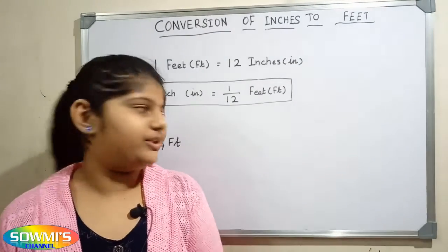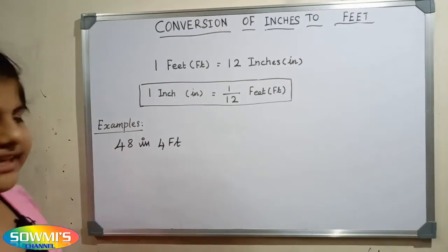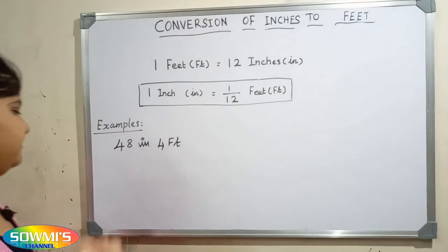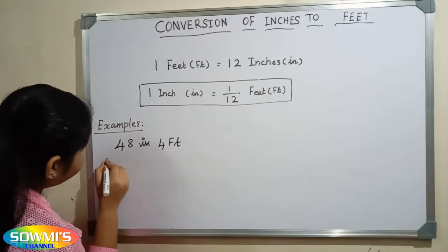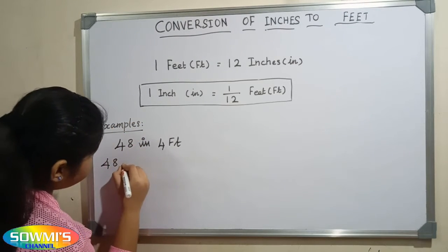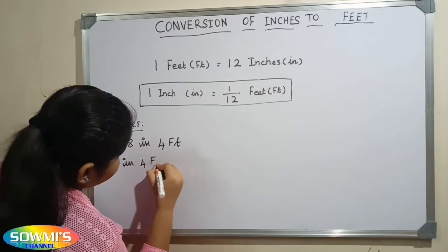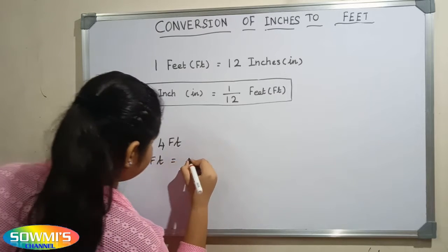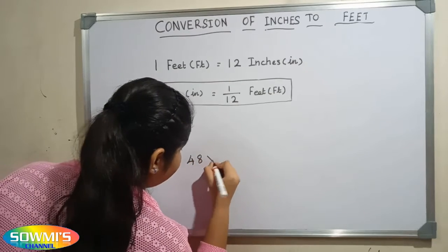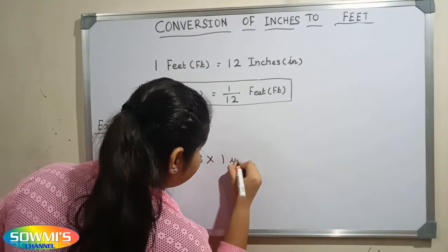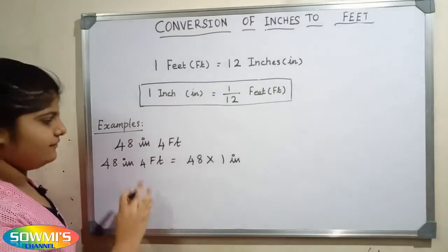First we have to convert 48 inches into feet. So 48 inches and 4 feet is equal to 48 multiply 1 inch plus 4 feet.